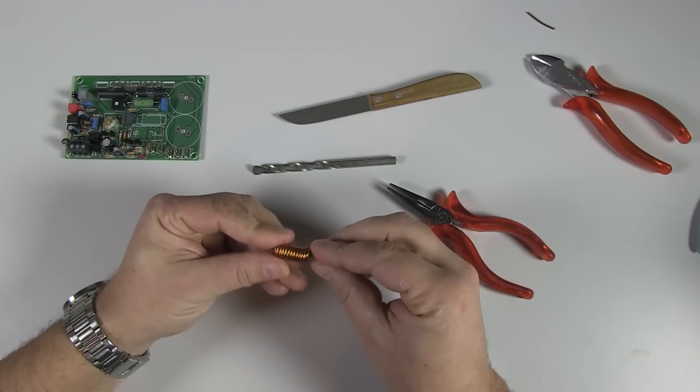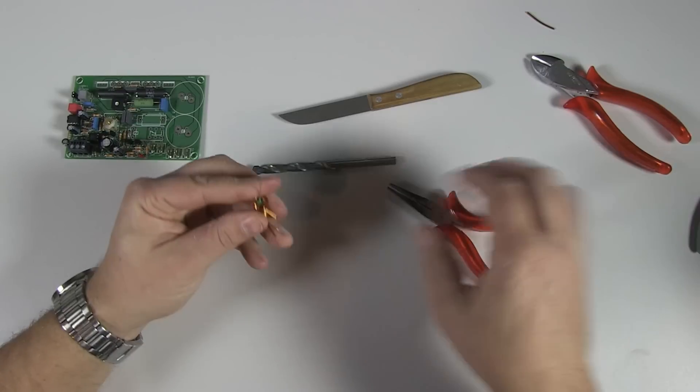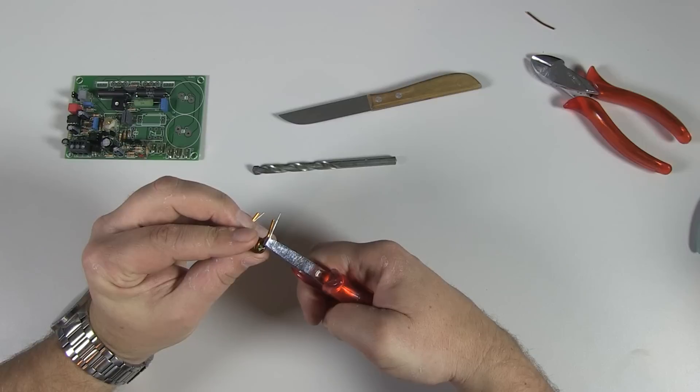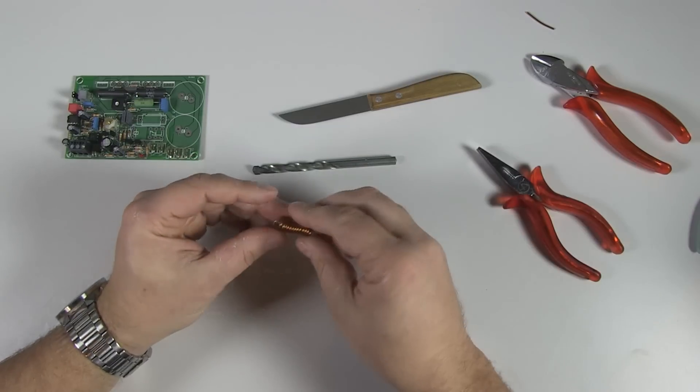Insert the 3.9 ohms 5 watts resistor in the coil like this. Bend the leads, and mount the assembly onto the PCB.